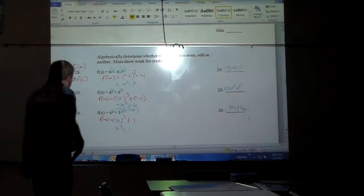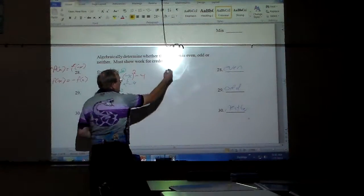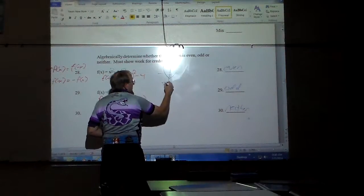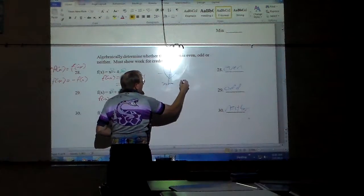Also, even functions look symmetric. If I was to graph x squared minus four, it would look like that. Symmetric to the y-axis.